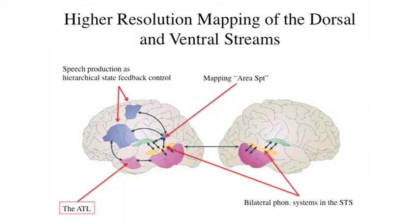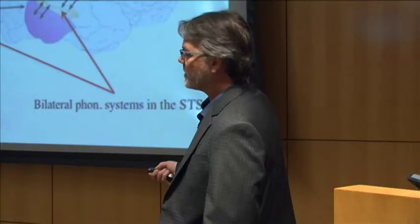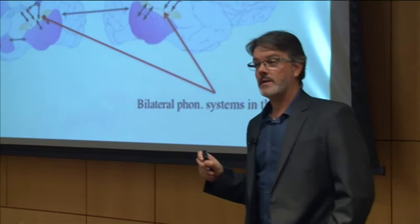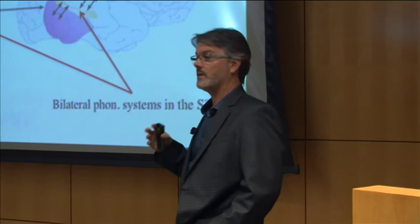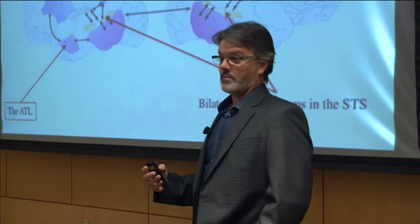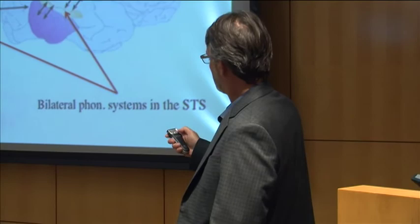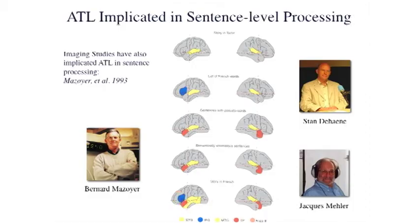The last main topic is the anterior temporal lobe, which has been implicated in aspects of language processing. I've been talking about language mostly in terms of syllables and words, but it's obviously much more complicated. Probably the most interesting aspects involve syntax and higher-level structures. Identifying brain regions associated with these higher-level processes has been very difficult. Broca's area has gotten the most attention, but I think that's largely misguided.